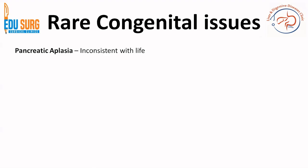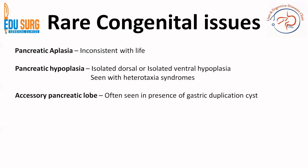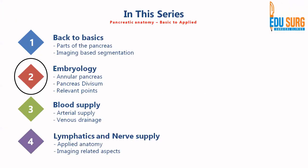Rare congenital anomalies include pancreatic aplasia — complete absence of the pancreas, which is incompatible with life — and pancreatic hypoplasia, which can be seen in heterotaxia syndrome as isolated dorsal or ventral hypoplasia. An accessory pancreatic lobe presents as a tongue-like projection from the normal pancreas, seen in association with gastric duplication cysts. The junction of the accessory pancreatic duct with the main duct can develop strictures later in life, leading to chronic pancreatitis.